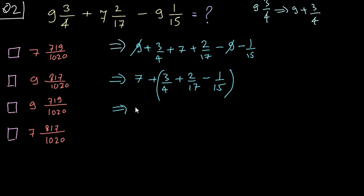Now, you can write 7 plus and you can solve these terms. At this point, these two options can be ruled out easily because here there is 7 and we have a 7 here. If you look at these two options, both of these denominators are 1020. So naturally, in our problem, the denominator is anyway going to be 1020.